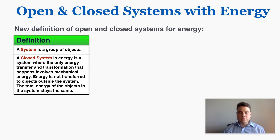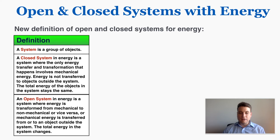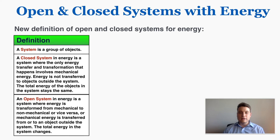An open system in energy is a system where energy is transformed from mechanical to non-mechanical energy or vice versa, or where mechanical energy is transferred to or from an object outside the system, so that the total energy in the system changes. Just like in momentum where an open system has a changing total momentum, here an open system has a changing total energy — but the reasons are different.